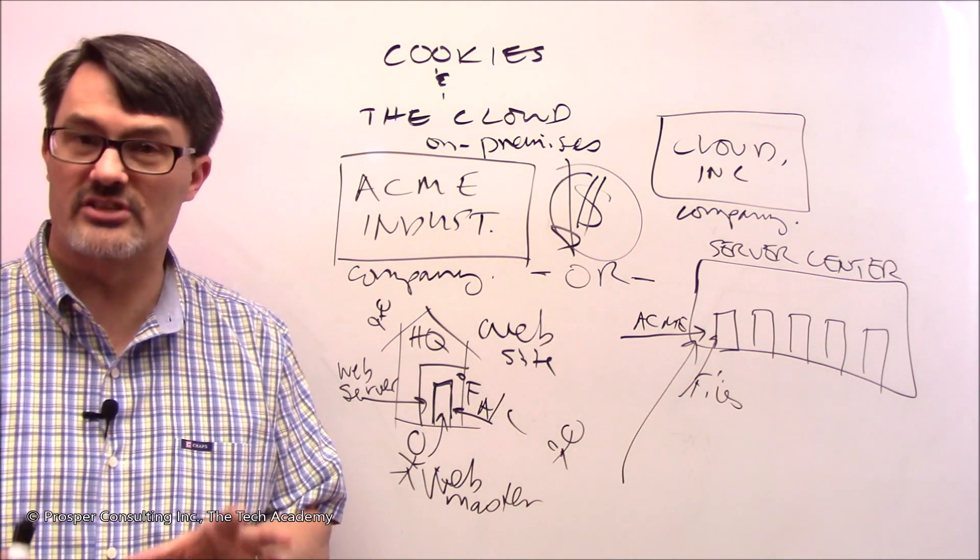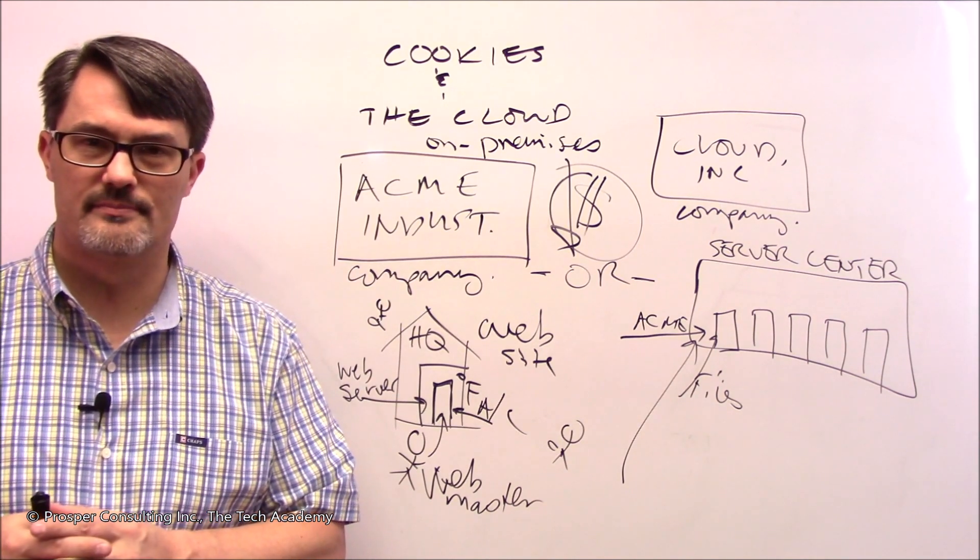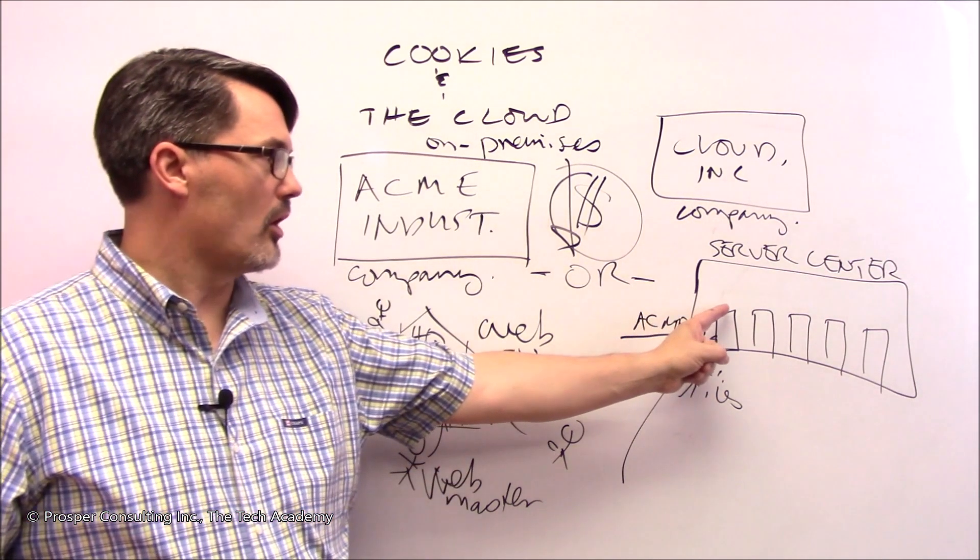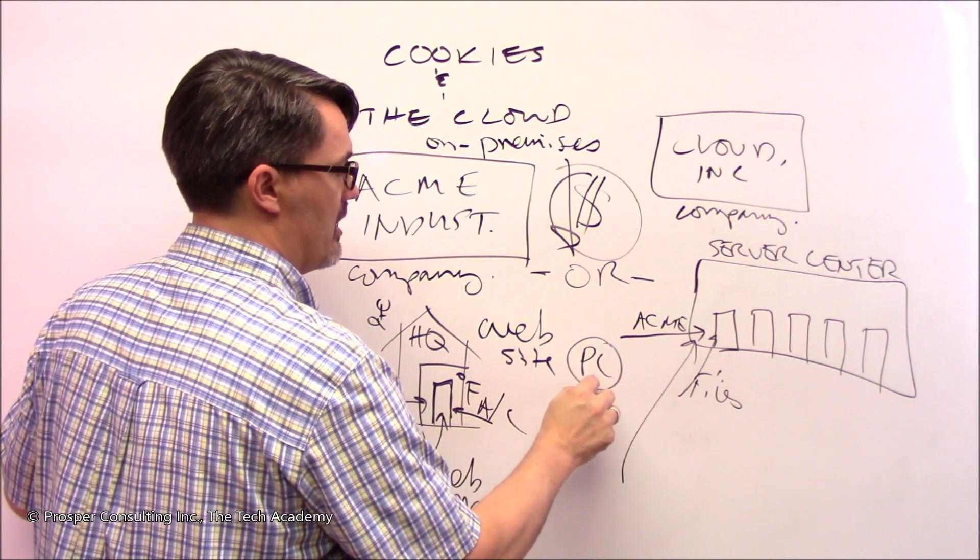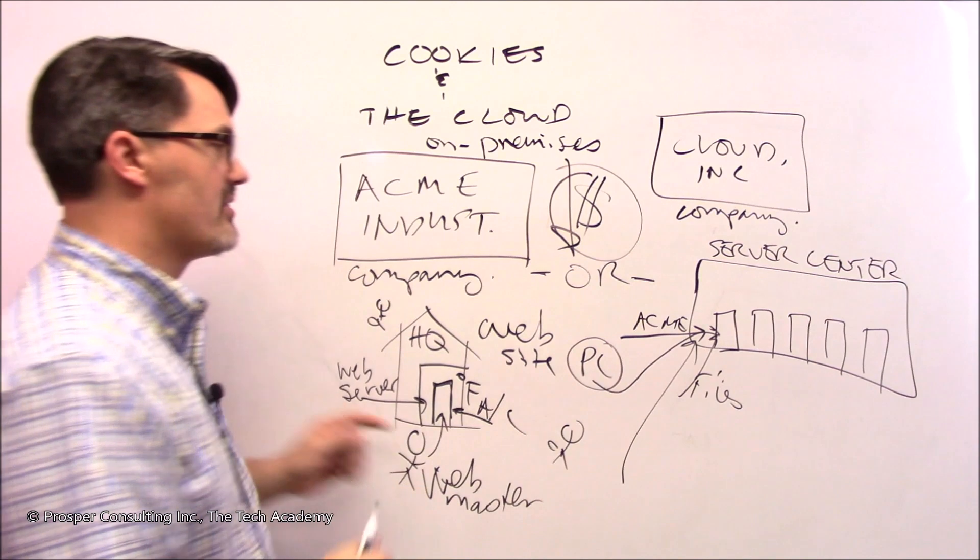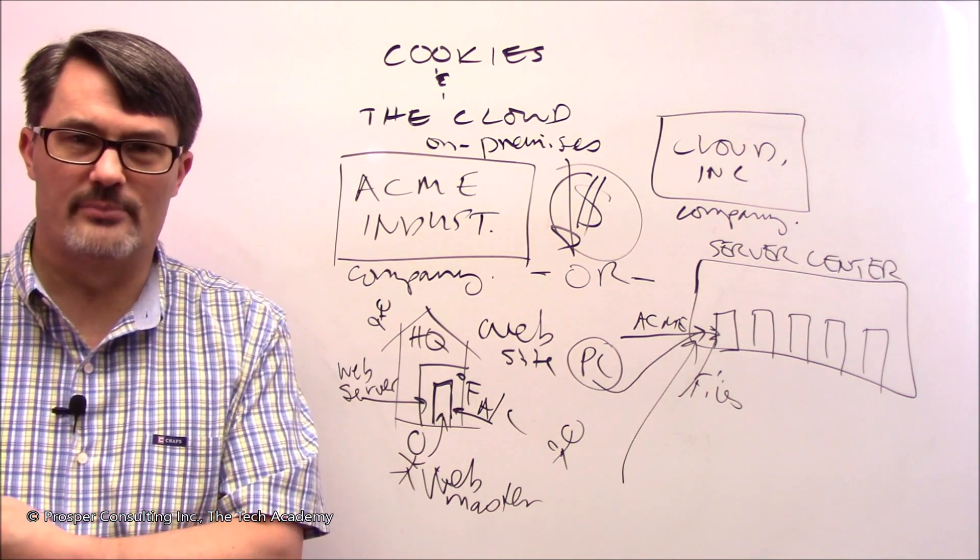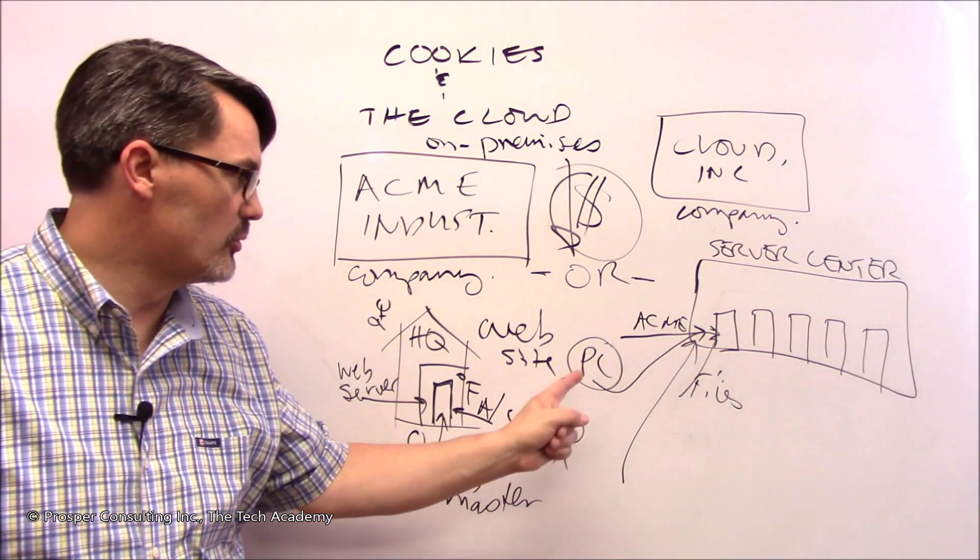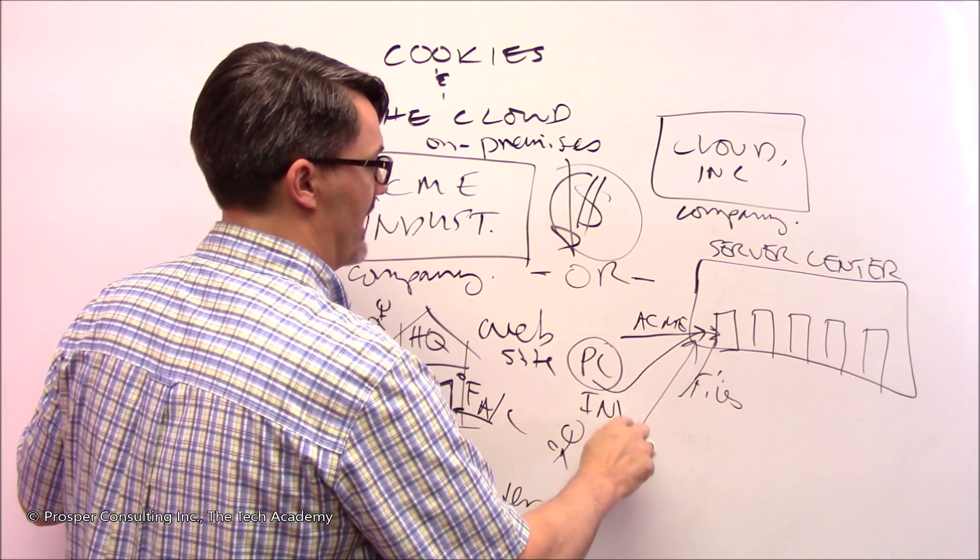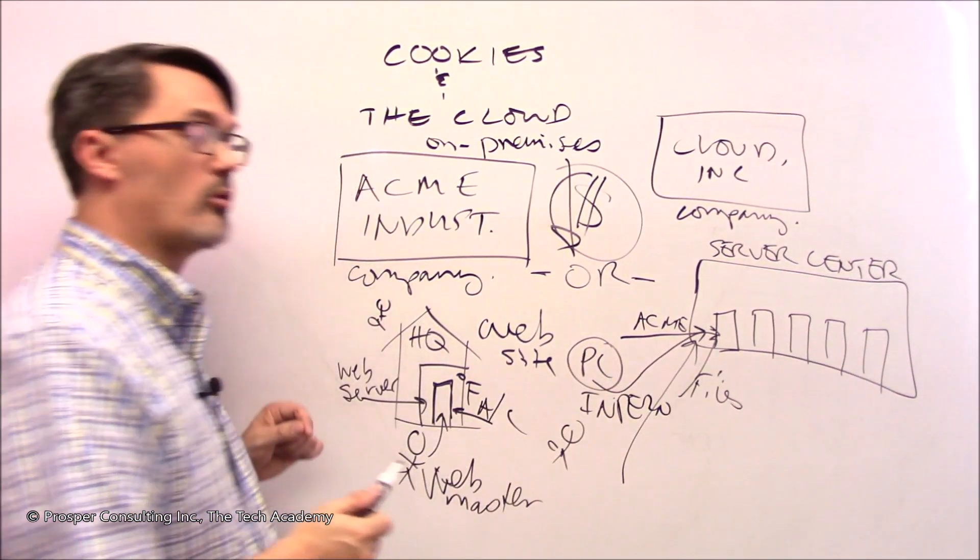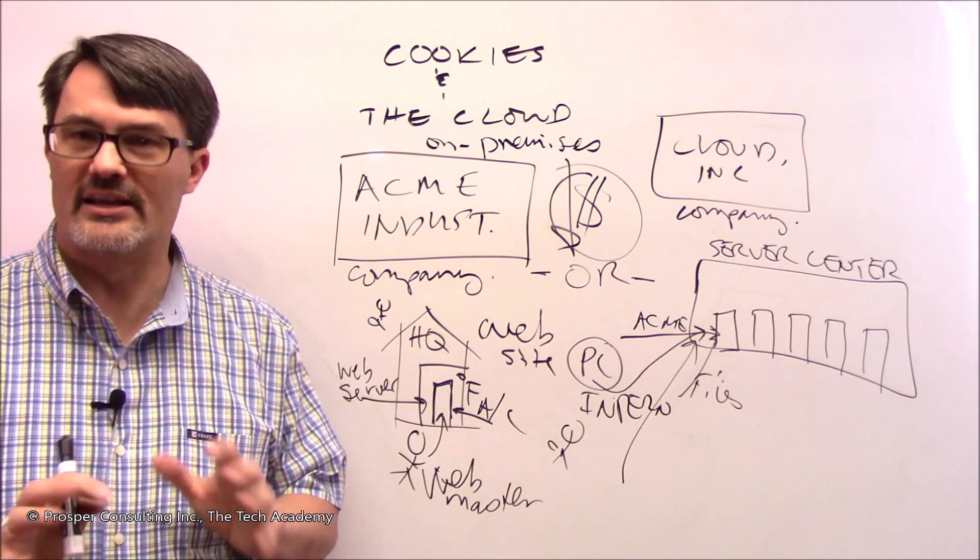As an example, as a software developer, you can actually do the following. The computer programs that you use to make computer programs can actually be hosted out on a server here in the cloud. And you, from your computer, can log in there and operate that software on someone else's computer. You can create software using special programs that are designed to make software, and you're not even doing it on your machine. You're using a machine in the cloud. Now, you do need access to the internet to do that, because that's how you're going to connect to this remote computer. But you can do that. It's a relatively common practice for software developers. So, get used to the cloud. It's going to be around a while.